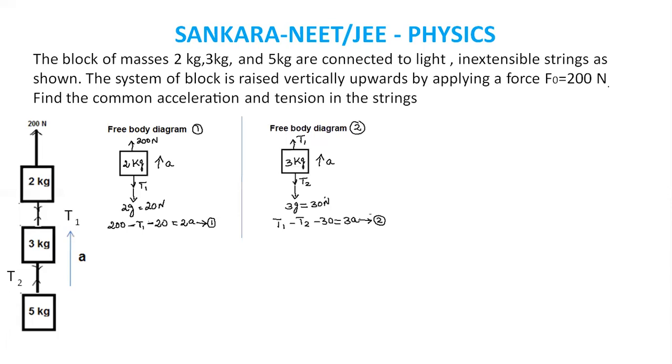Free body diagram for 3 kg: the equation is T1 minus T2 minus 30 equals 3A. That is the second equation.